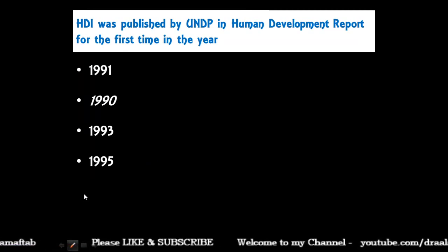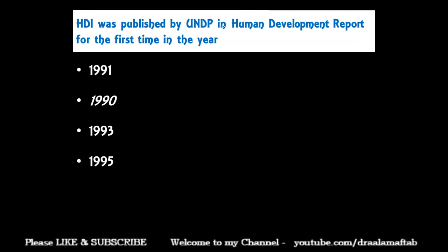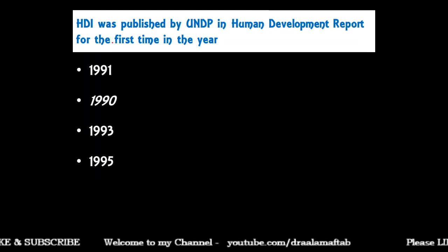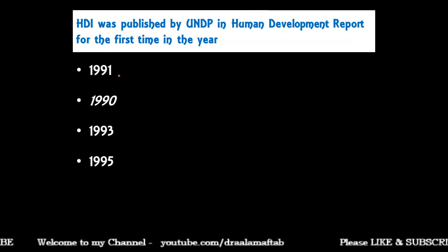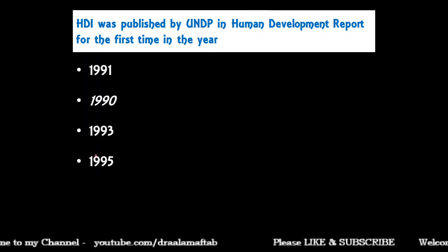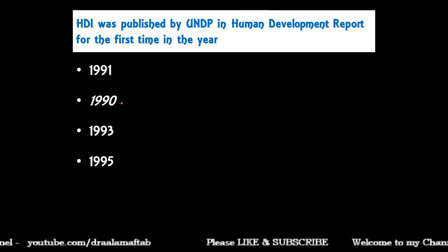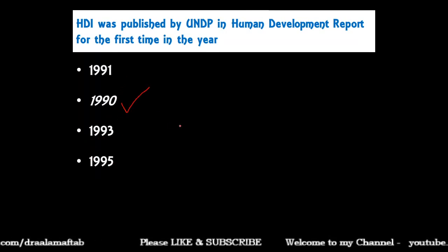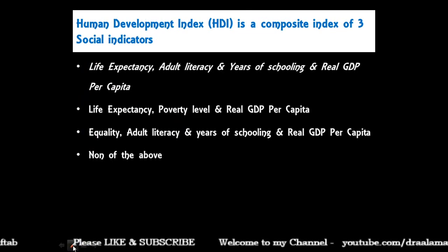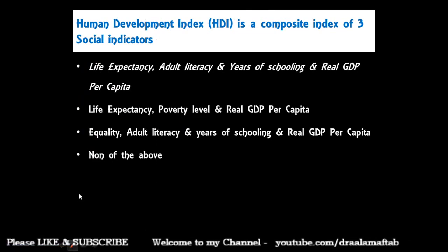HDI was published by UNDP — the United Nations Development Programme — in the Human Development Report for the first time in which year: 1991, 1990, 1993, or 1995? It was first published in 1990.